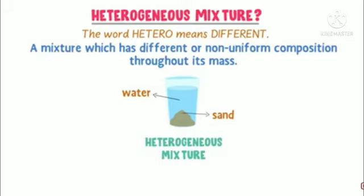Heterogeneous mixture. 'Hetero' means different. A mixture which has a different or non-uniform composition throughout is called a heterogeneous mixture. For example, sand in water. When sand is added into the water, it does not dissolve. This solution is called a heterogeneous mixture.